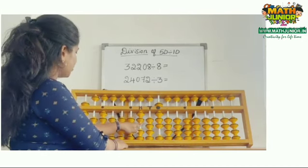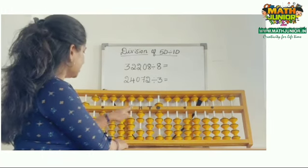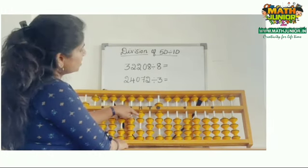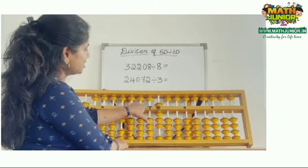Then I left with 02. 8 0s are 0. Then I left with 20. 8 2s are 16. Minus 10 and minus 6 is minus 5 plus 4.